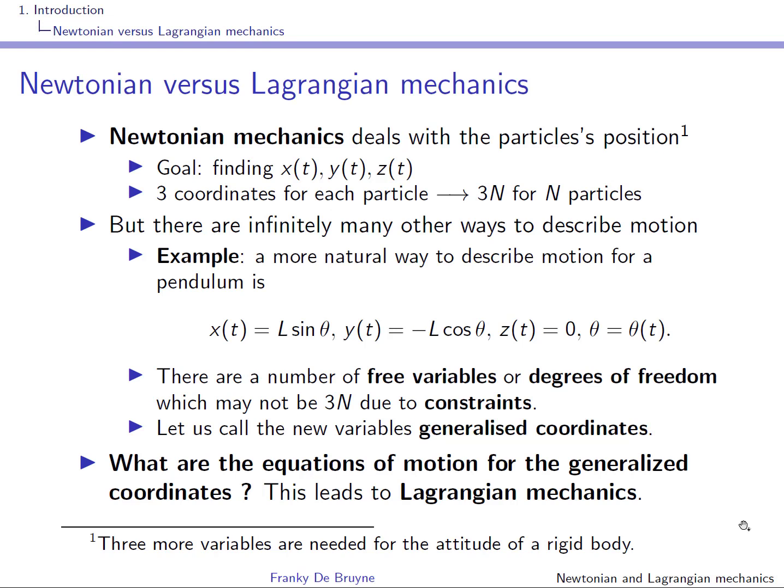Let us consider a system with n particles, n ideal particles. For each particle, there is no rotation, so you need three coordinates for the description of its motion. Since you have n particles, this gives you 3n coordinates, 3n variables. But in reality, you know that there are constraints between the coordinates, constraints between the variables. Let us take an example of that using a pendulum.